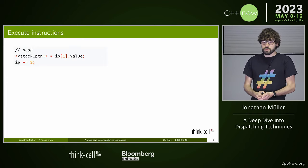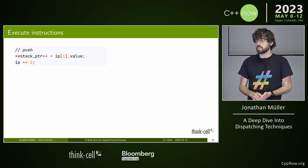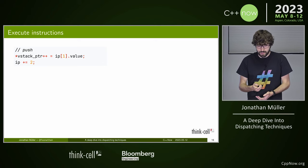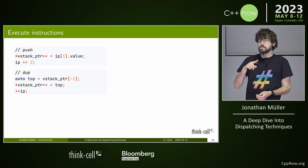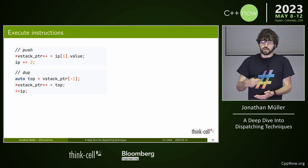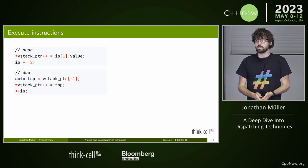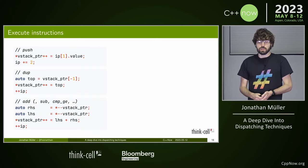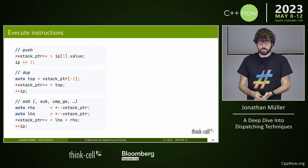Each instruction is implemented very straightforwardly. Push takes the payload at the next offset and puts it on top of the VStack, then increments the instruction pointer by two. Duplicate takes the top of the VStack at offset minus one and pushes it again, then increments by one since there's no payload. Add, subtract, comparison and so on all look the same: pop the operands, compute the result, push it back, then increment by one.